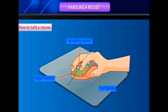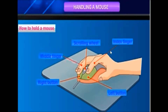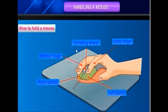Now we will learn how to hold a mouse. This is the left button, right button, and scroll button. Place your index finger on the left button and your middle finger on the right button.